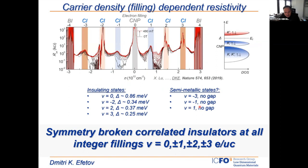The experiments we perform are relatively straightforward once we have the device: we simply measure resistance as a function of carrier density. We sweep the Fermi energy from a completely empty moiré band until we completely fill it. The carrier density changes by orders of magnitude as we do so.